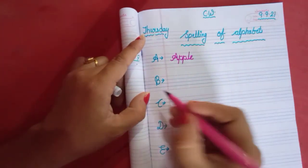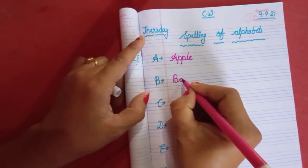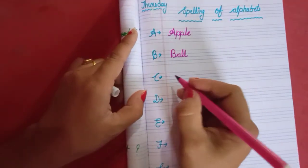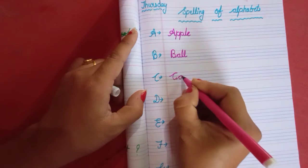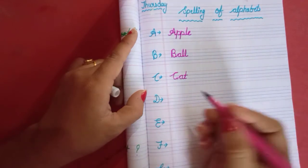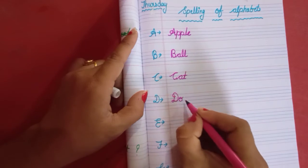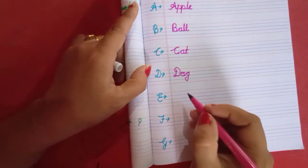B for ball. C for cat. C A T cat. D for dog. D O G. Dog. Remember children. Use only cursive writing.